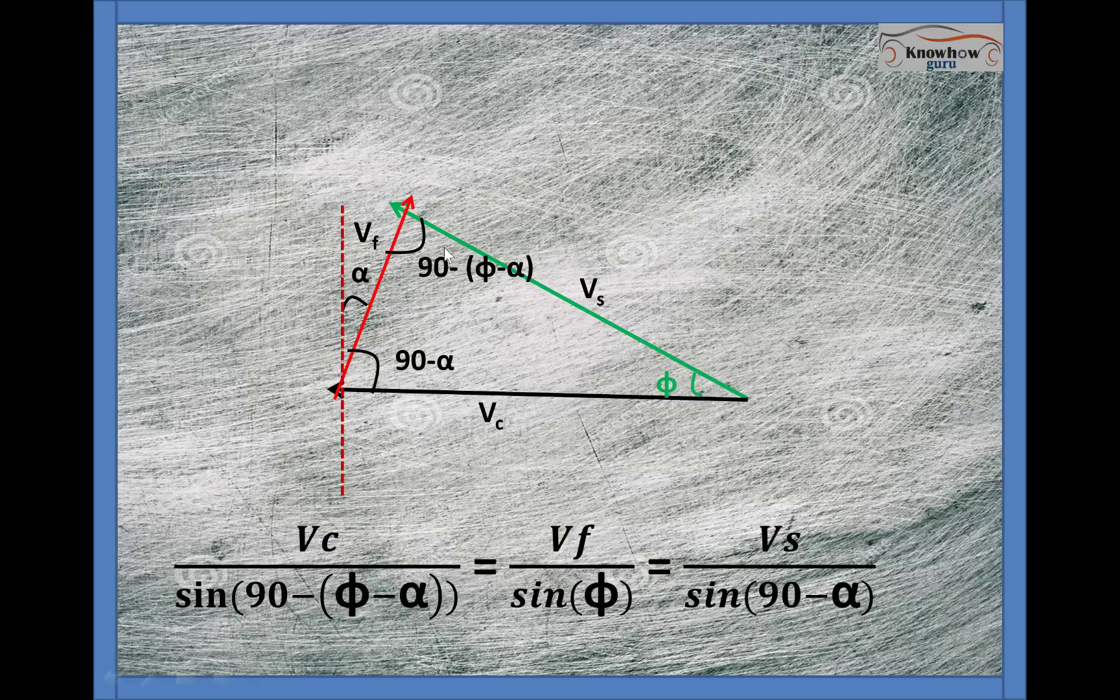Actually if you remember the basic of merchant circle, their force component how it is lying and what angle it is making, all those things, then it's very easy to extract a velocity triangle from them.